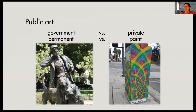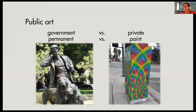Thinking about what public art is - you can define it lots of different ways. Essentially it can be anything that you see as a piece of art in your community. In what I've been doing, it's mostly been government-owned art and permanent pieces like sculptures, mostly because I'm mapping all over a large part of Los Angeles and I don't always visit all these locations. So I don't want to map something and then it gets taken away.